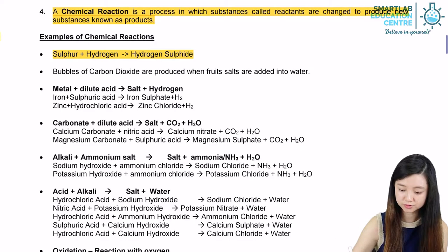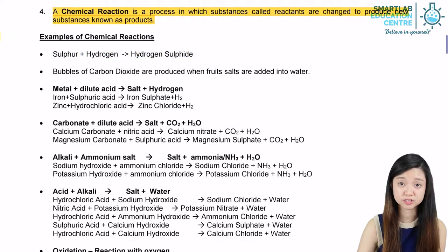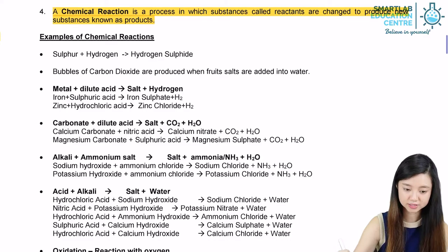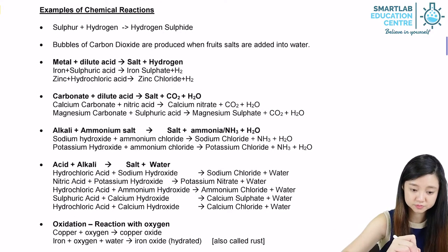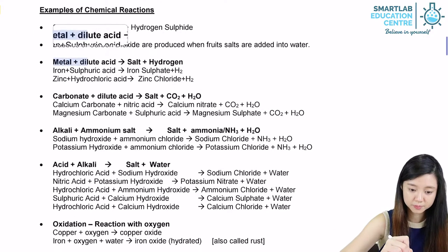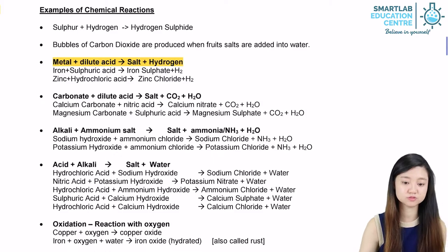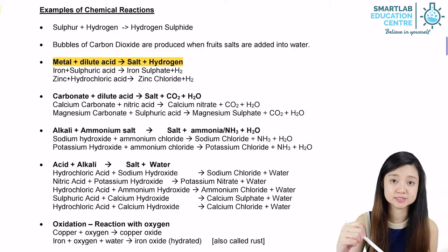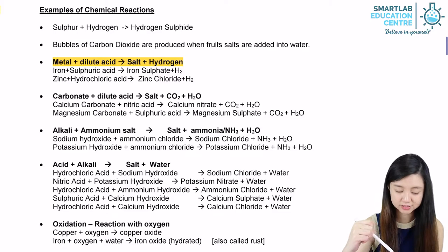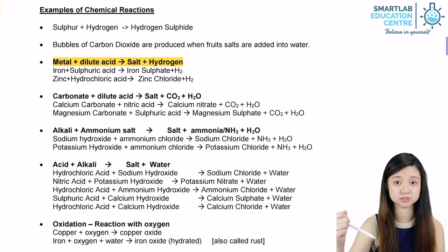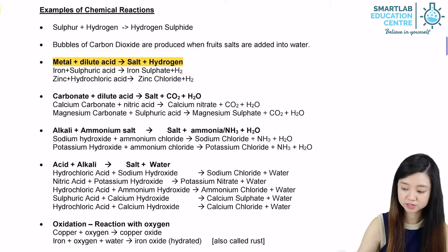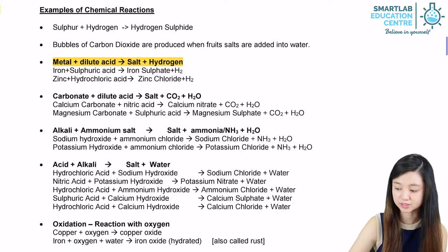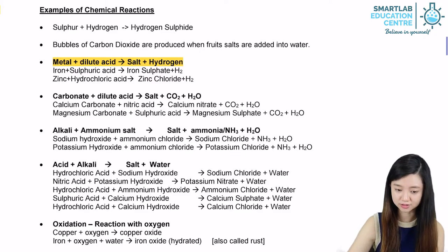There are a few general equations in chemistry that we should memorize. The first one: metal plus acid will give you salt plus hydrogen. Metal and acid are the reactants, while salt plus hydrogen are the products. The salt here actually refers to an ionic assembly of cations and anions — it is not the everyday salt that we have.